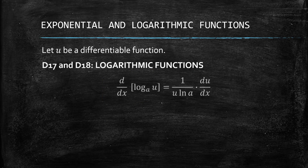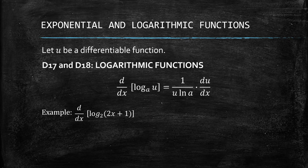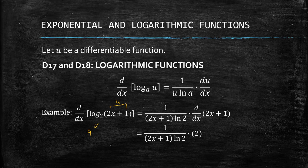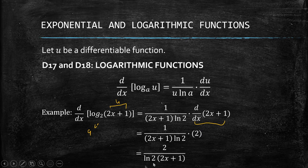For the logarithm to base a, the derivative of log_a(u) equals 1/(u · ln(a)) times du/dx. For example, the derivative of log base 2 of (2x+1): we have 1 over (2x+1) — our u — times ln(2) times the derivative of 2x+1, which is 2. Simplified: 2 over (ln(2) · (2x+1)), where ln(2) is a constant placed at the left by convention.